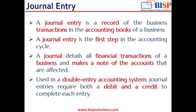A journal entry is the first step of the accounting cycle. Journal entries detail all the financial transactions of the business and make a note of the accounts that are affected. Journal entries are posted based on the principles of the double entry system. This means you can add as many lines of account into your transaction, but the total of the debit amount and the credit amount must be the same.